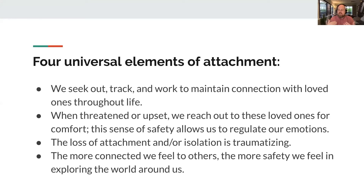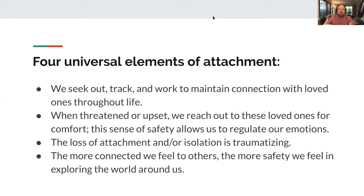That's the first universal element of attachment. Number two: when we're threatened or upset, we reach out to these loved ones for comfort, and this sense of safety allows us to regulate our emotions. It is primal that when we are experiencing fear or anxiety, we reach out to loved ones for comfort. This secure attachment, this sense of safety in that relationship, is what allows us to regulate our emotions — even if they're not there in the moment. For example, if I've had a really rough day, just knowing I can go home to my wife and she will be there and I can share with her helps me regulate in the moment until I get there.